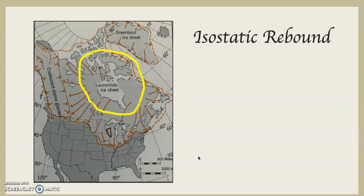Where is this happening? That entire area around Hudson Bay is going through isostatic rebound — in some cases at about an inch a year. If you're 24 years old, that means in your lifetime it may very well have risen by two feet, which may not sound like a lot. But play that out over time, it becomes a lot.